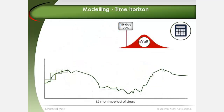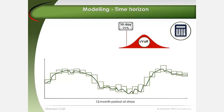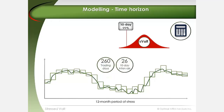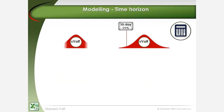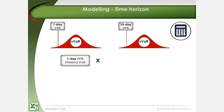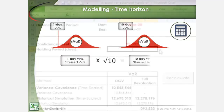In a 12-month stress period, as prescribed by regulation, there are only 26 consecutive 10-day intervals, if we assume 260 trading days in a year. As such, it may be impractical to model a 10-day VAR directly from an historical one-year window. A more practical approach is to simply scale higher a 1-day VAR measure by the square root of time.